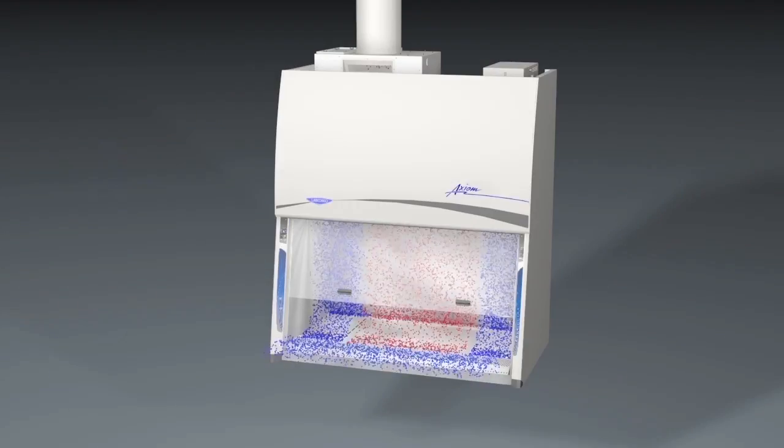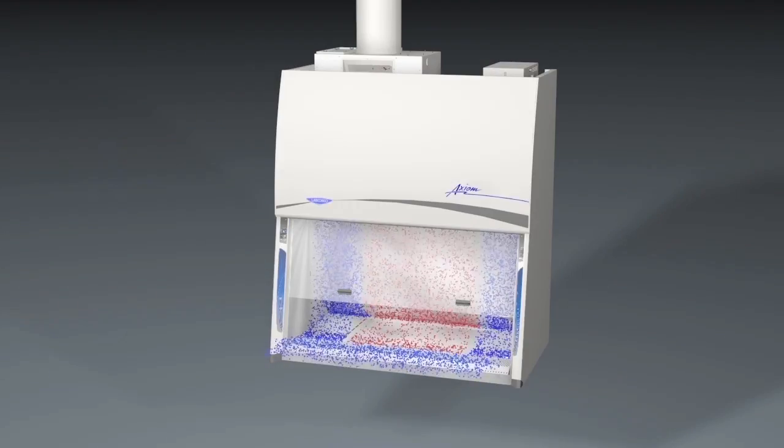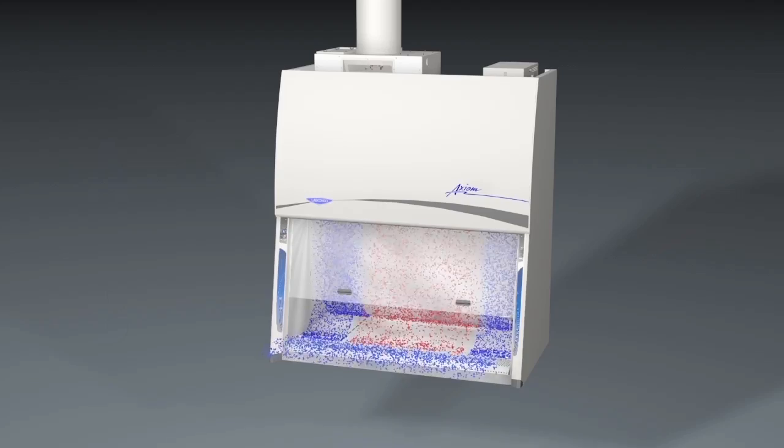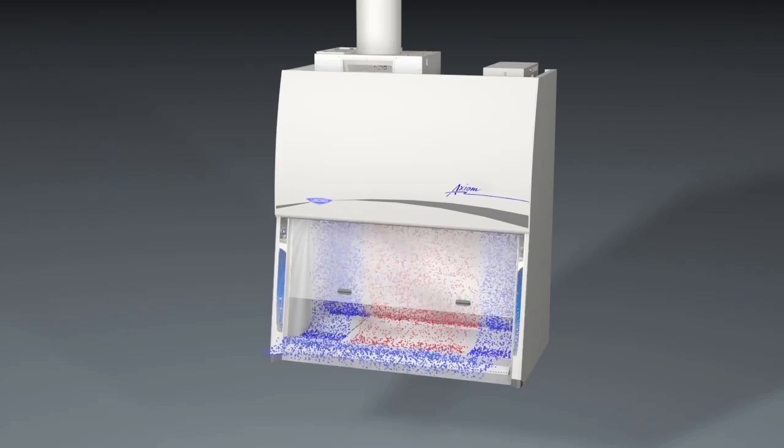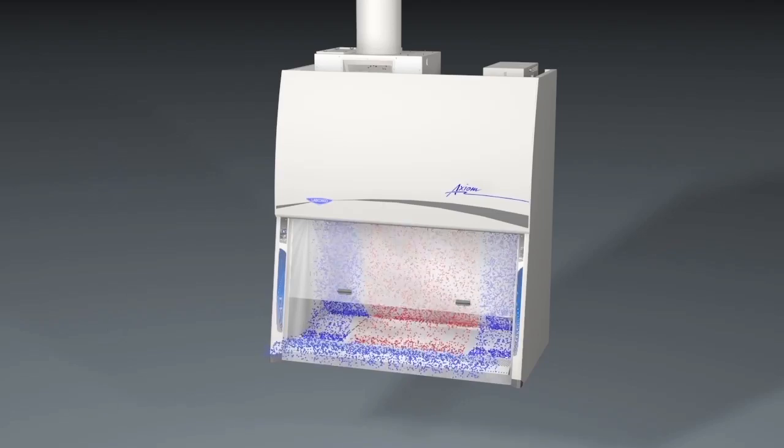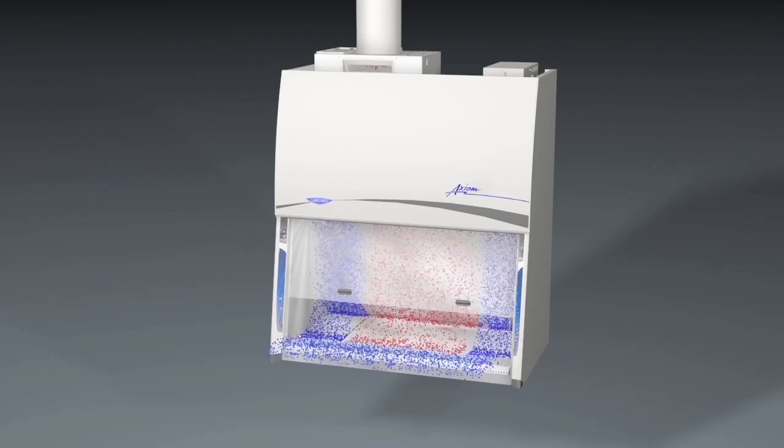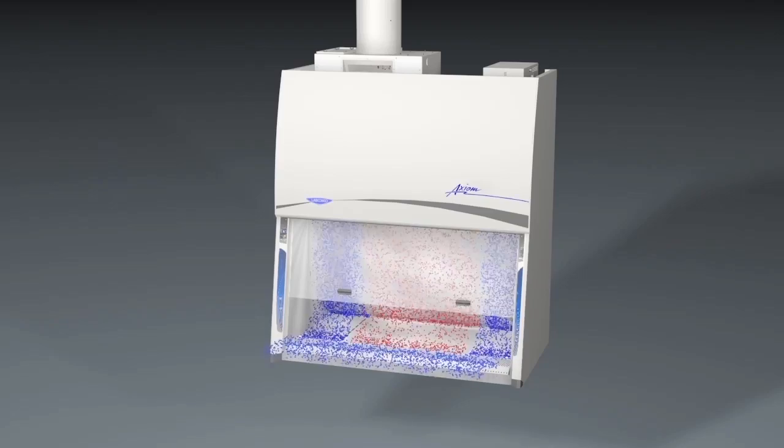This innovative approach to operational and failure mode protection in a Class II BSC with an open-zone work surface makes the Axiom as safe as any Type B cabinet during operation and safer than any Class II BSC when a building's exhaust system fails.